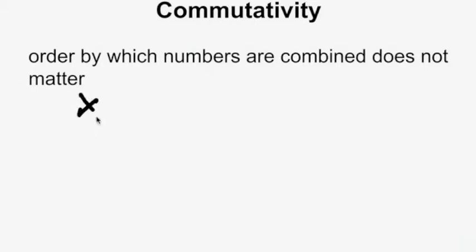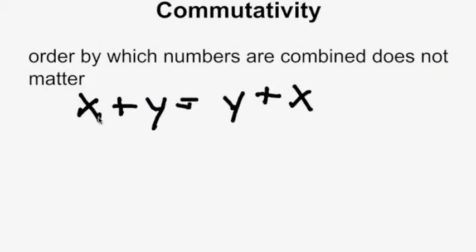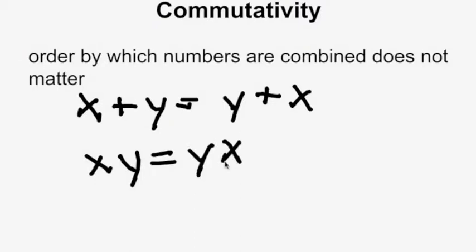The next property is commutativity. Commutativity states that the order in which numbers are combined does not matter. So x plus y equals y plus x, and x times y equals y times x.